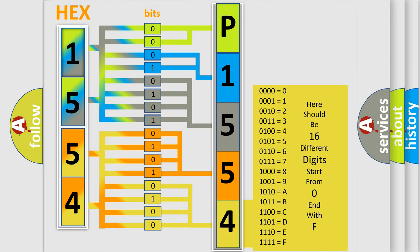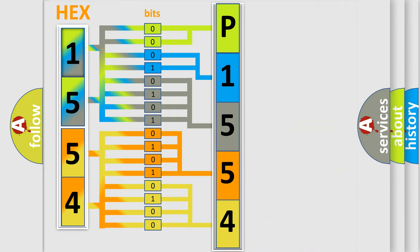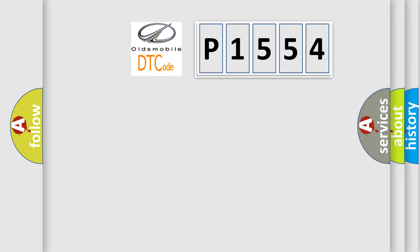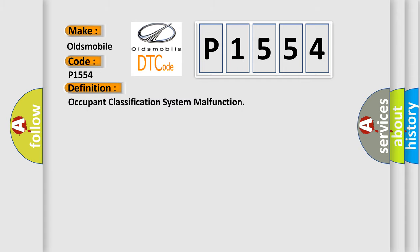We now know how the diagnostic tool translates received information into a more comprehensible format. The number itself does not make sense to us if we cannot assign meaning to what it actually expresses. So, what does the diagnostic trouble code P1554 interpret specifically for Oldsmobile car manufacturers?